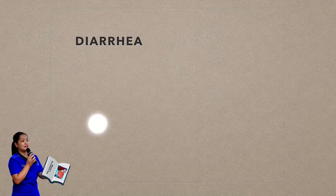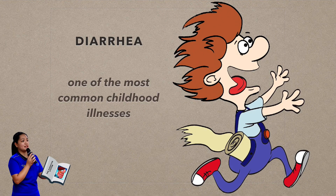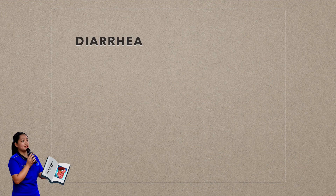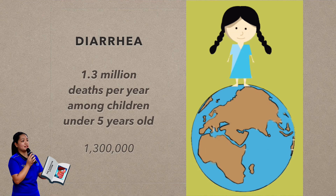Diarrhea is one of the most common childhood illnesses. It is caused by a number of conditions including bacterial infection, viral infection, food intolerance or allergies, and parasites. Diarrhea is the second leading cause of death in children — approximately 1.3 million deaths per year among children under 5 years old. A significant proportion of this disease can be prevented through safe drinking water and adequate sanitation and hygiene. Diarrhea is also a leading cause of malnutrition in children under 5 years old.